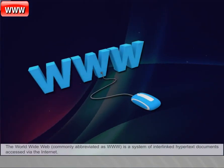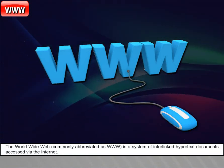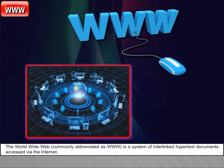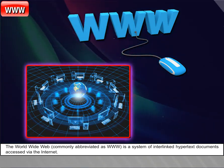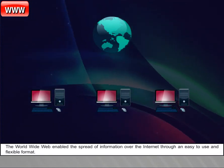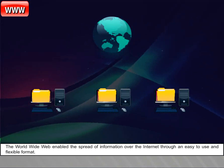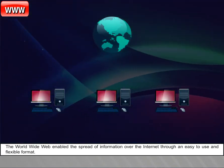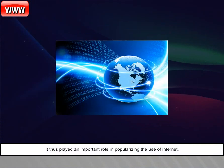WWW: The World Wide Web, commonly abbreviated as WWW, is a system of interlinked hypertext documents accessed via the internet. The World Wide Web enabled the spread of information over the internet through an easy-to-use and flexible format, and played an important role in popularizing the use of the internet.